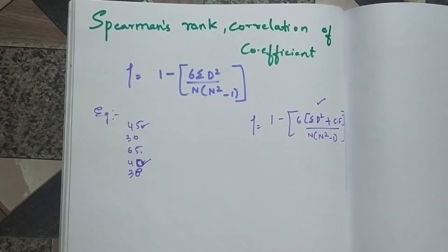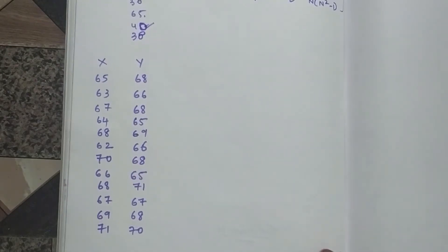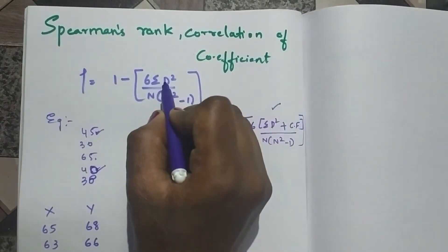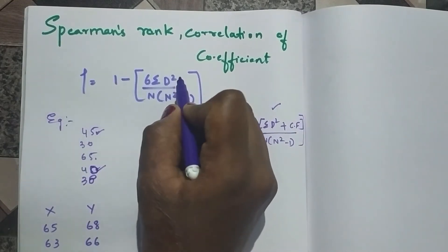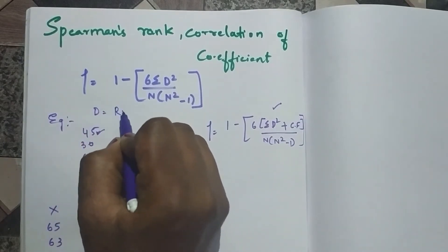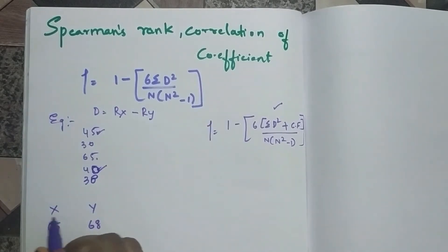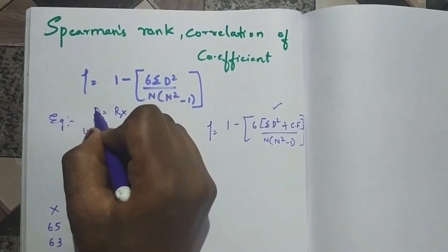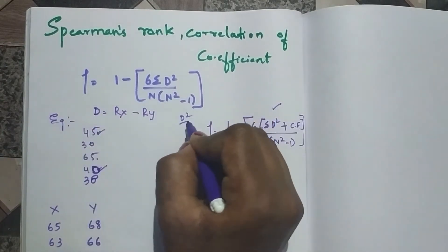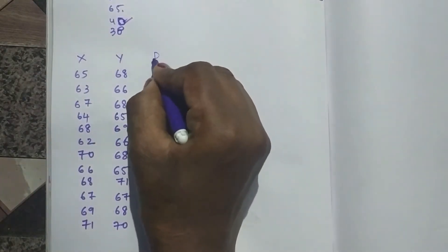Now let's go with an example problem. What we need according to our formula is d². To find d², first we need to find d. D is equal to rank of x minus rank of y. So we have to find rank for x and rank for y, then get the d value, then square it to get d².